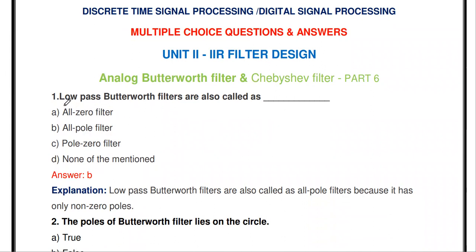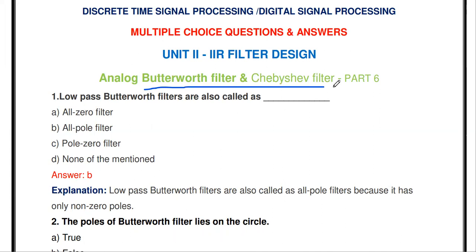The first question: low-pass Butterworth filters are also called as dash. In IIR digital filter design, there is no straight procedure to design the digital filter directly. For a given digital specification, first we have to design the analog approximation. After that, we convert that analog approximation into a digital filter using techniques like bilinear transformation, impulse invariant method, and so on. The two types of analog approximation are Butterworth and Chebyshev.